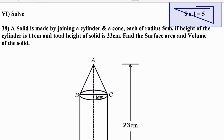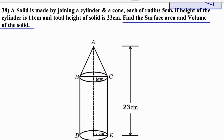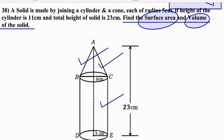From the diagram, find the surface area and volume of the solid. Surface area = CSA of cone + CSA of cylinder. Volume = volume of cone + volume of cylinder. Concentrate on these questions, understand the meaning, and solve the problems. Thank you — if you like this video, please share and subscribe.